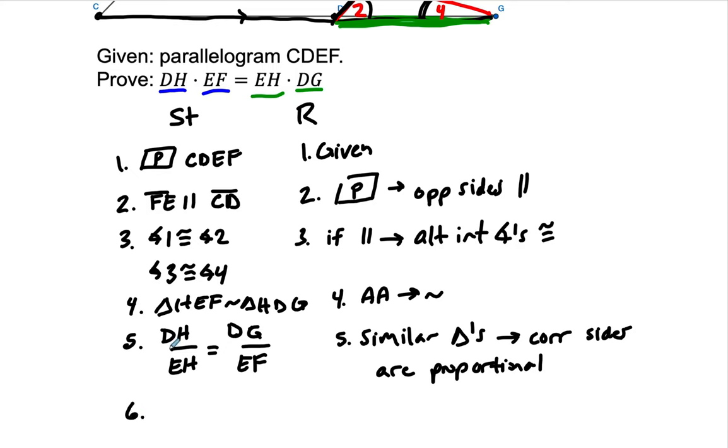And then finally, in step 6, we can rearrange this and just say that DH times EF equals EH times DG. And the reason is that the product of the means equals the product of the extremes. And that's it.